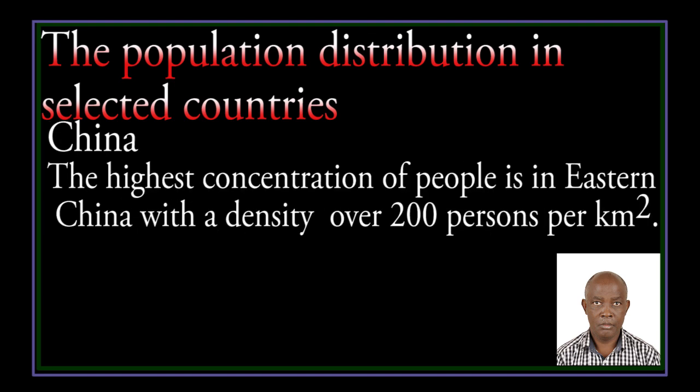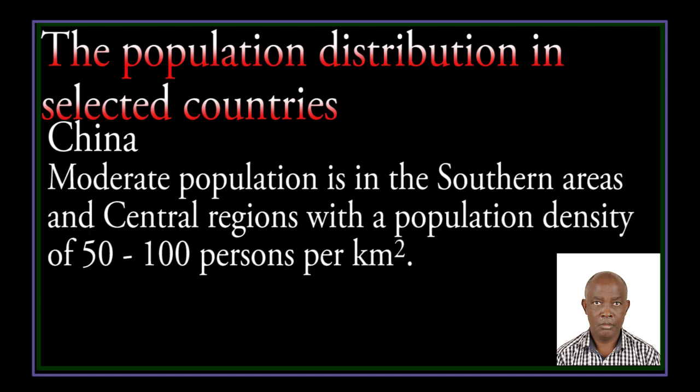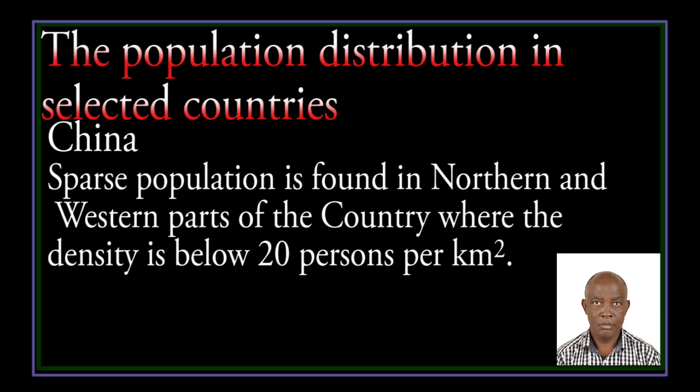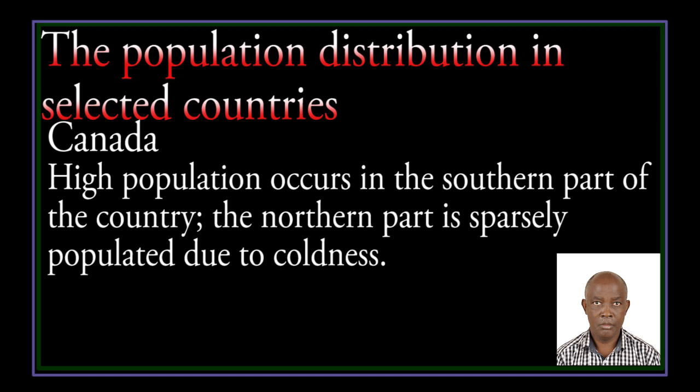In China, the highest concentration of people is in eastern China, with a density over 200 persons per square kilometre. Moderate population is in the southern and central areas, with a population density of 50 to 100 persons per km². Sparse population is found in the northern and western parts of the country, where the density is below 20 persons per km². In Canada, high population occurs in the southern part of the country, while the northern part is sparsely populated.